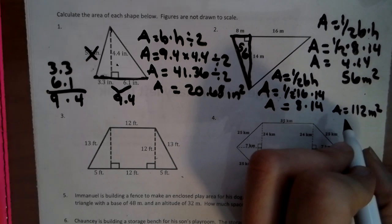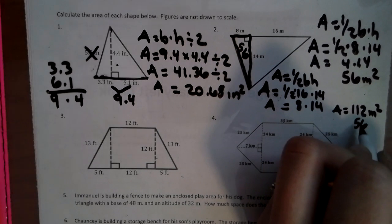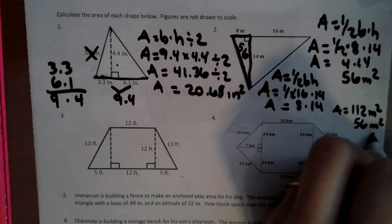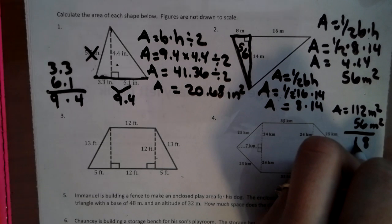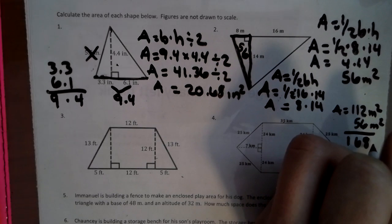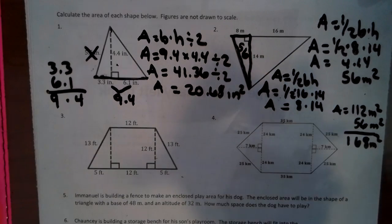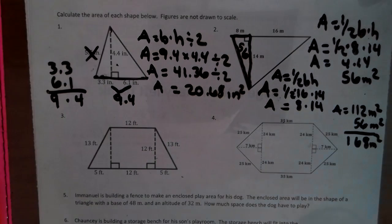So we have area equals 112 meters squared. And then we have to take 56 and add it with that. 168 meters squared for that whole thing.